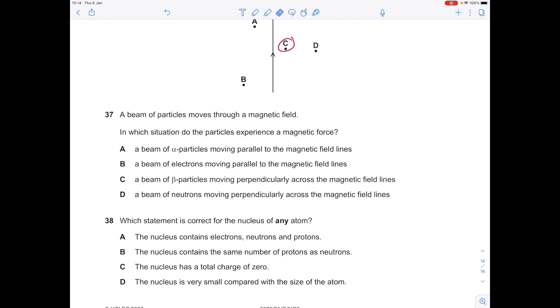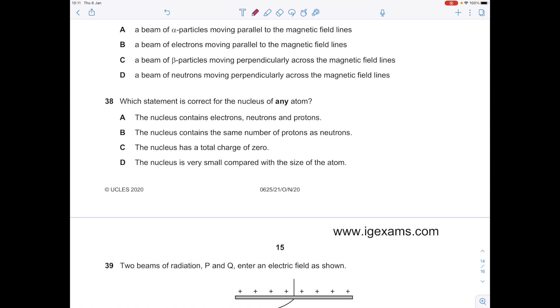A beam of particles moves through a magnetic field. In which situation do the particles experience a magnetic force? Remember, to create a force the particles need to be moving perpendicular across the magnetic field lines. Therefore it can't be A or B because they're moving parallel. If you look at D, we've got neutrons moving, but they're uncharged. We need a charged particle. Beta particles are negatively charged, so the answer is C.